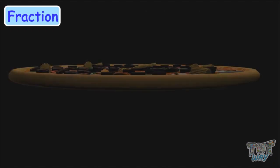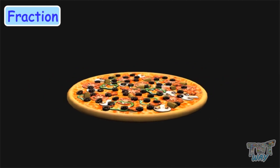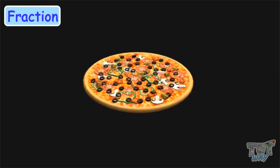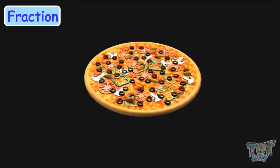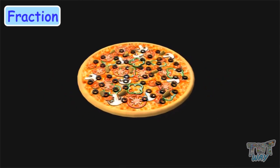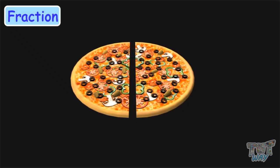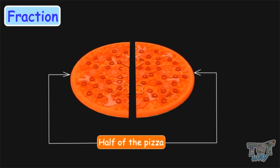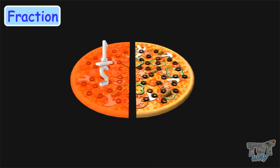Suppose your mom cooks a yummy pizza for you and then she cuts the pizza into two equal parts. Then each part is said to be half of the pizza, which is written as one by two in fractions because it is one part out of two equal parts.